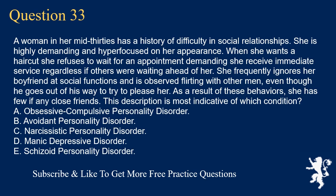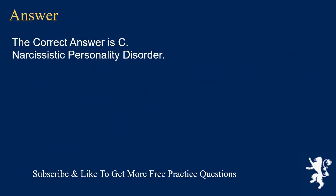Question 33. A woman in her mid-30s has a history of difficulty in social relationships. She is highly demanding and hyper-focused on her appearance. When she wants a haircut she refuses to wait for an appointment, demanding she receive immediate service regardless if others were waiting ahead of her. She frequently ignores her boyfriend at social functions and is observed flirting with other men, even though he goes out of his way to try to please her. As a result of these behaviors, she has few if any close friends. This description is most indicative of which condition? A. Obsessive-Compulsive Personality Disorder. B. Avoidant Personality Disorder. C. Narcissistic Personality Disorder. D. Manic-Depressive Disorder. E. Schizoid Personality Disorder. The correct answer is C. Narcissistic Personality Disorder.